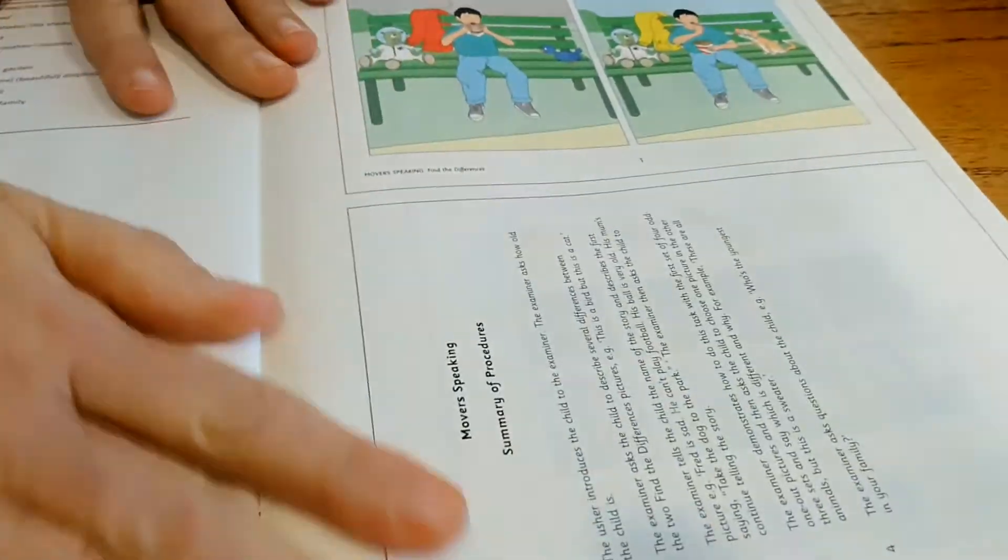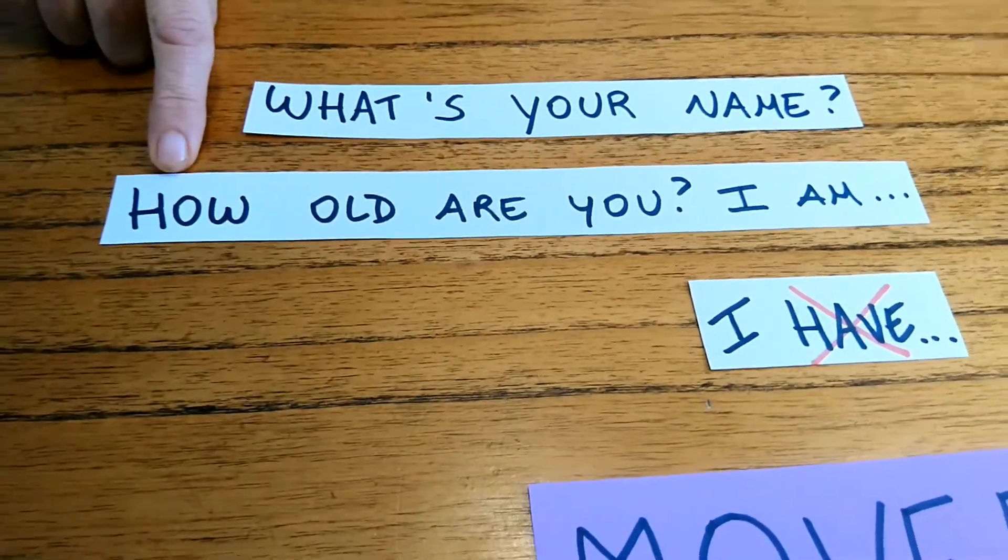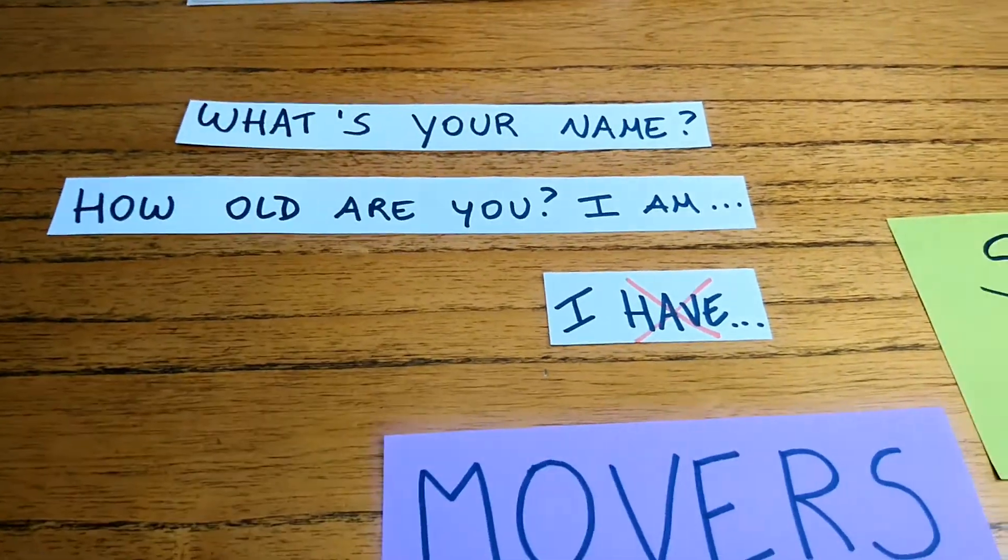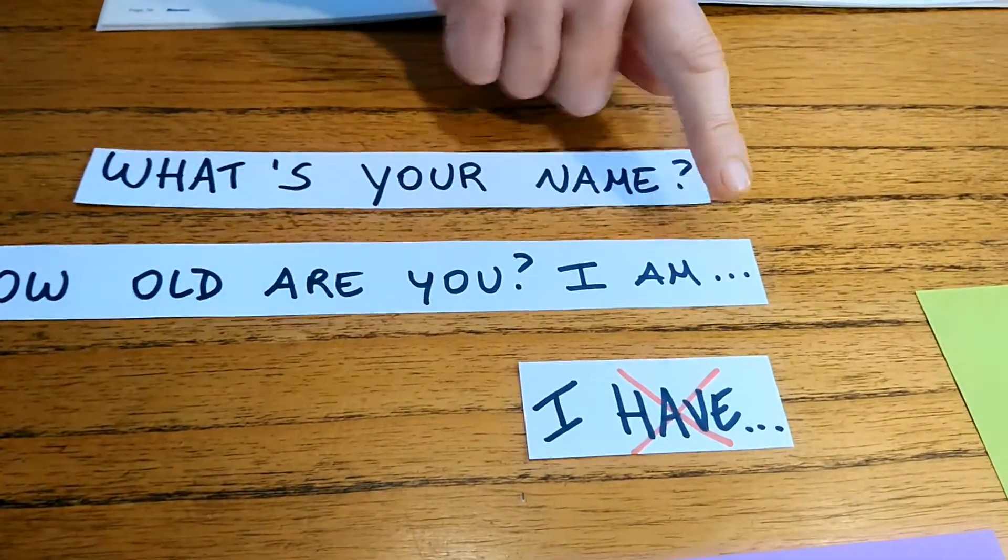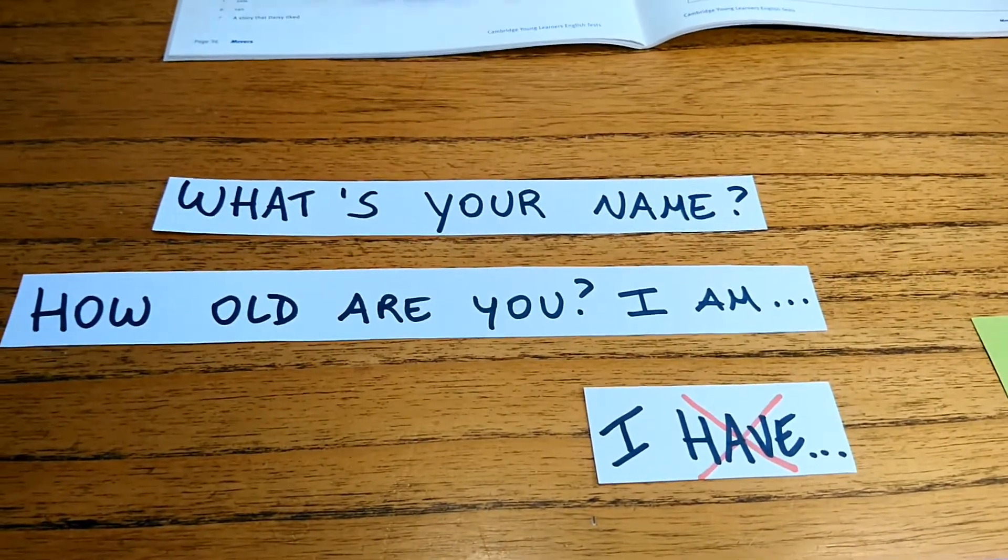Again, you have to say hello, you have to say goodbye when you leave. The examiner is going to ask you, what's your name? You have to answer. And he or she is also going to ask you, how old are you? I am eleven, I am. Don't say I have. Remember that.